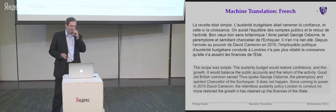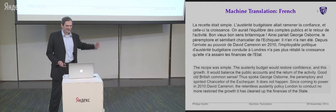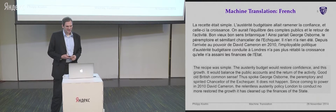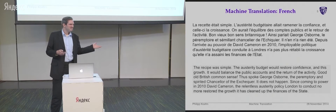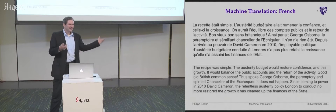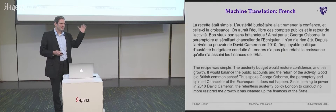Let's try something else. This is French — also just a randomly picked news article. The translation is: 'The recipe was simple. The austerity budget would restore confidence in this growth. It would balance the public accounts and return of the activity. Good old British common sense. Thus spoke George Osborne, the preemptory and spirited chancellor of the Exchequer. It does not happen. Since coming to power...' and so on. This is almost perfect. Some things are a bit odd, like 'the return of the activity' — that's apparently economic activity, but the French just says 'activity.' There are some other flaws but it's almost perfect. This is really good.